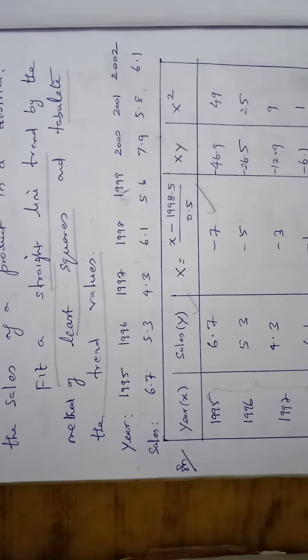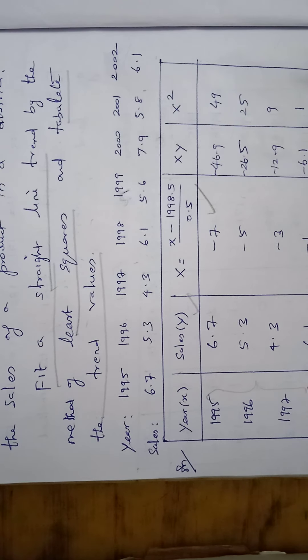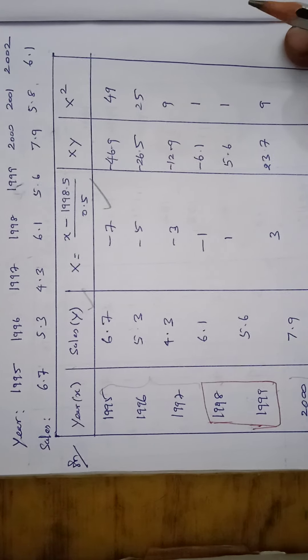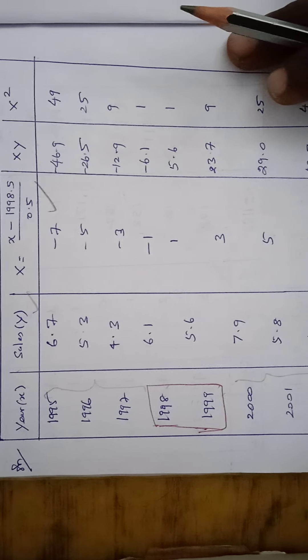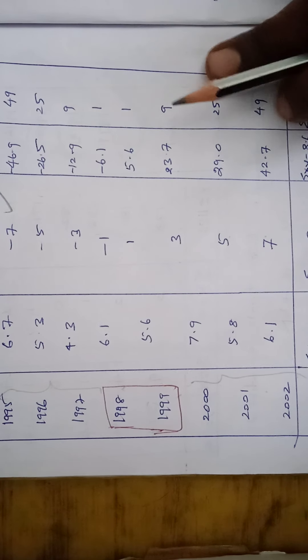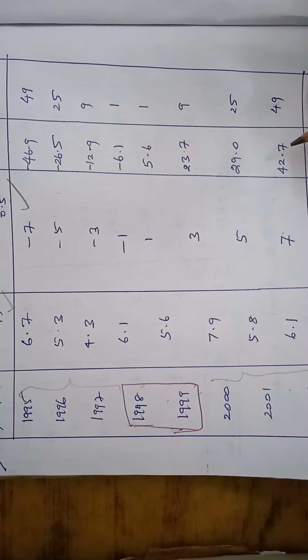So the years are given in 1995 to 2002. The corresponding sales are given. So the year can be taken in 1995 to 2002. So totally 8 years are given.